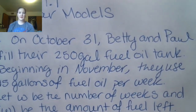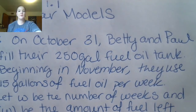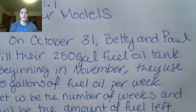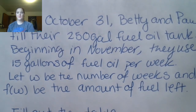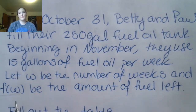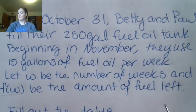This example says on October 31, Betty and Paul filled their 250-gallon fuel oil tank. Beginning in November, they use 15 gallons of fuel oil per week. We're going to let W be the number of weeks and F of W be the amount of fuel left. You can see that we are using function notation here, and we're going to continue to use function notation throughout this chapter.